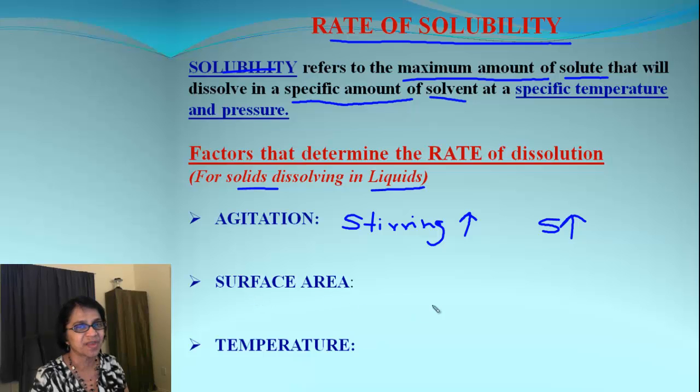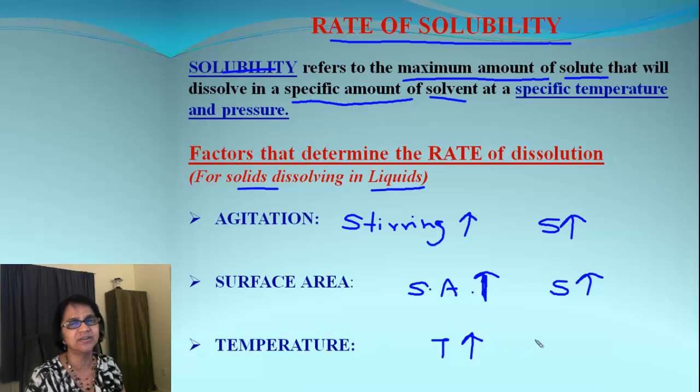Next is surface area. Higher the surface area, solubility will also increase. For example, if you take granular sugar versus sugar cubes, granular sugar has more surface area, so that will dissolve faster. Next comes temperature. When temperature increases, the molecules will start running around because they will have higher kinetic energy, which will help increase the solubility. So we found there are three important factors which will affect the rate of solubility.